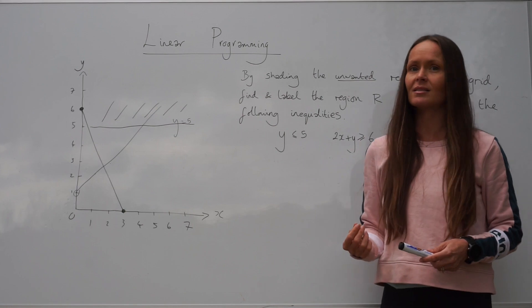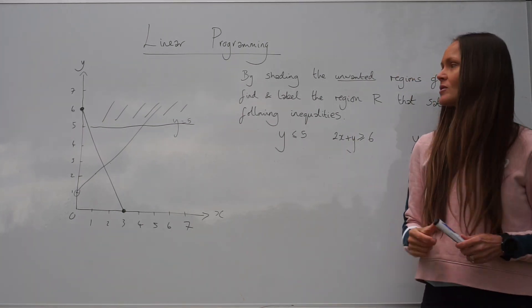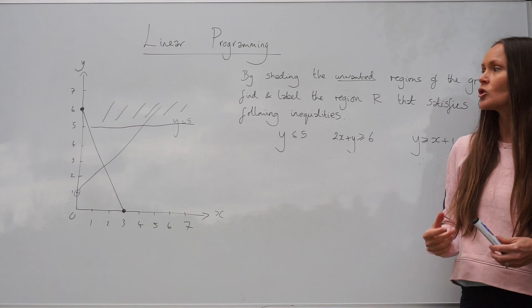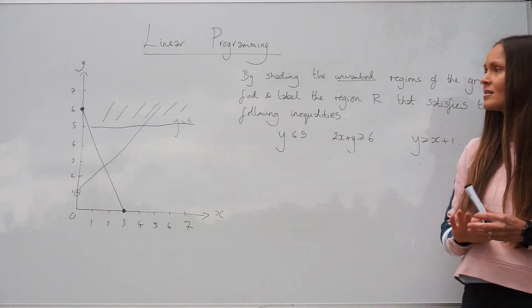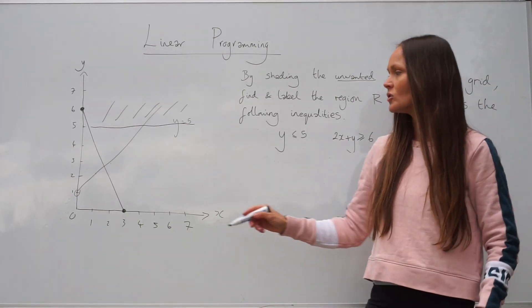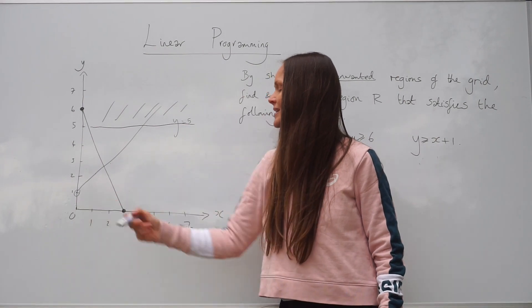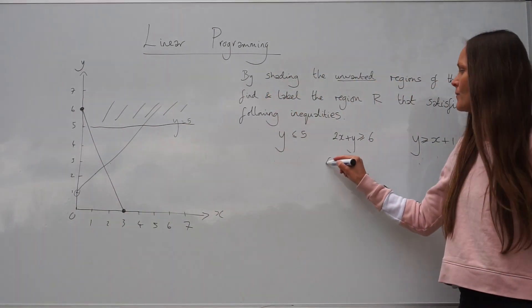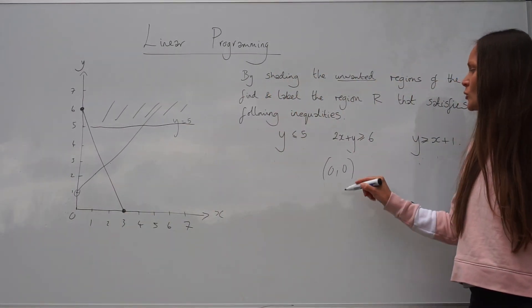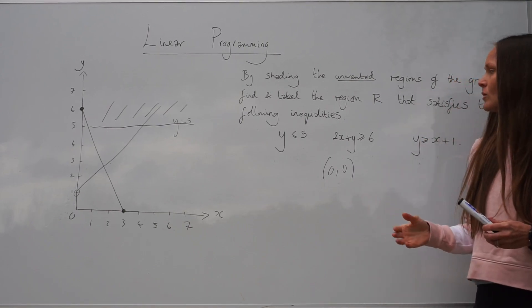If you can't see just that logical method, and you want something more precise, what you can do is choose a point on your grid. And it doesn't matter which point you choose. I'm going to choose the origin, because they're nice, easy coordinates, 0, 0.